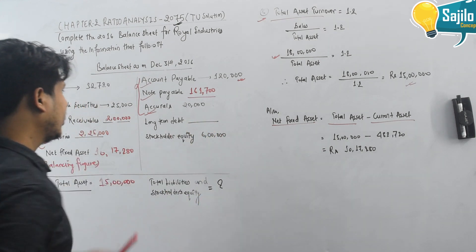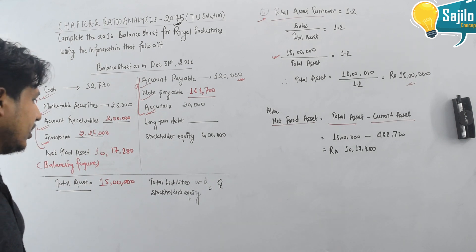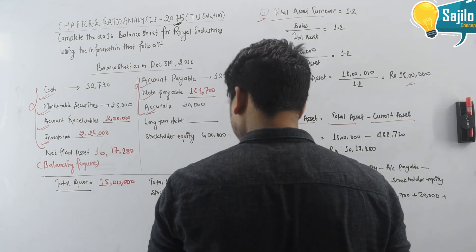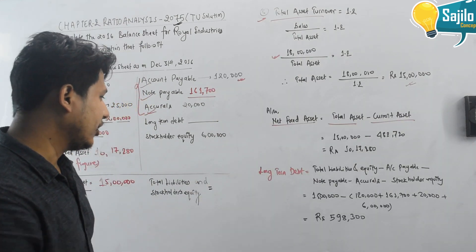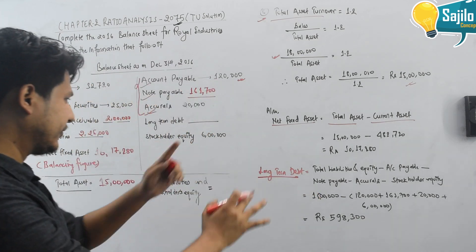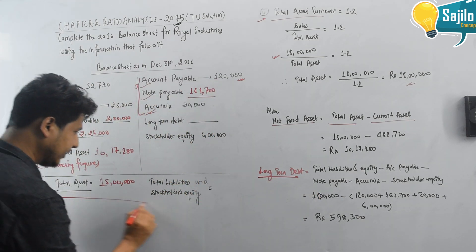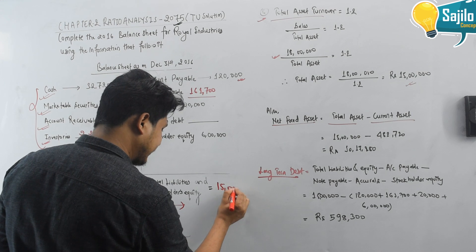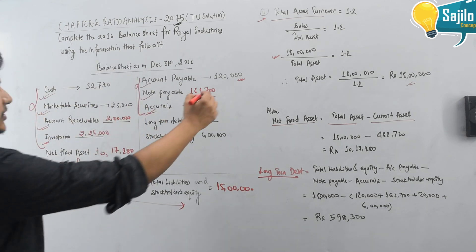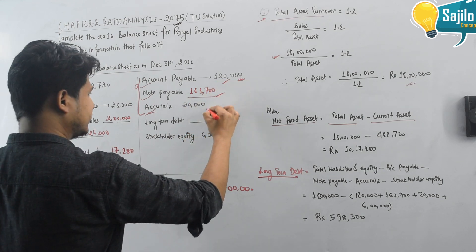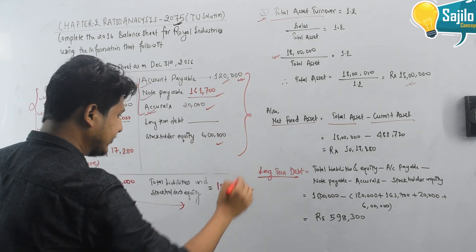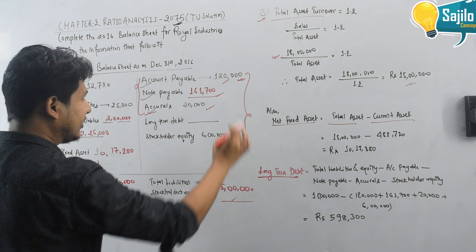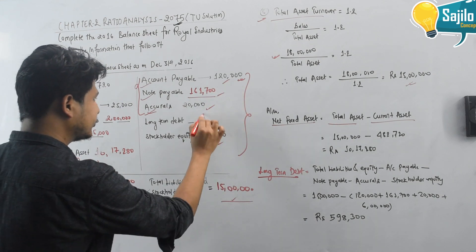For long-term debt, we use the debt ratio of 60%. Total debt equals 60% of total assets = 0.60 × $15,00,000 = $9,00,000. Long-term debt equals total debt minus current liabilities. The total liability and shareholders' equity is the balance figure equaling total assets of $15,00,000.